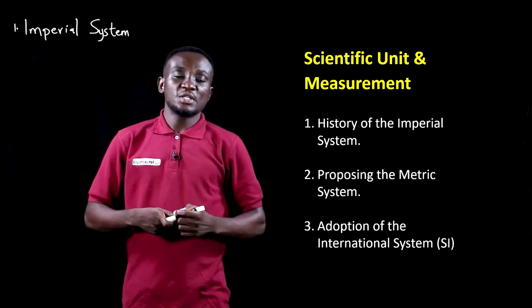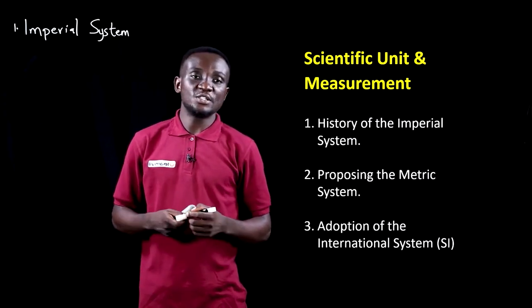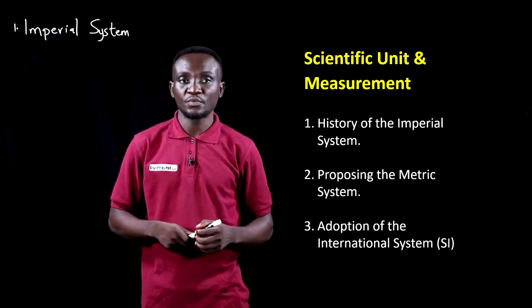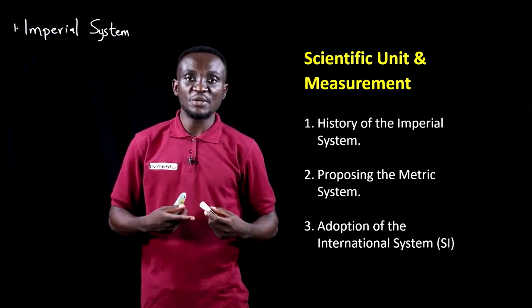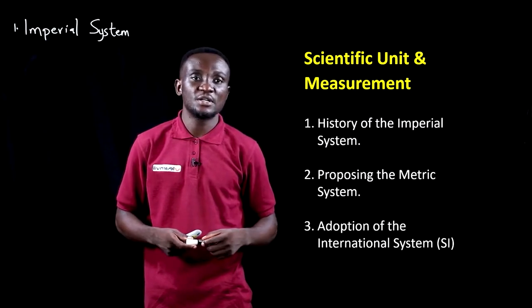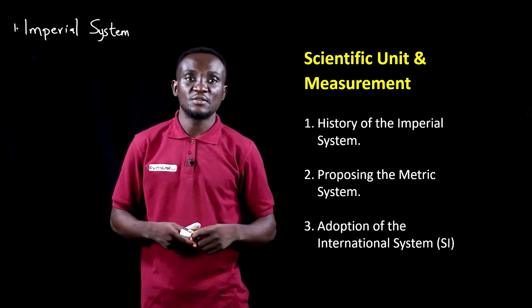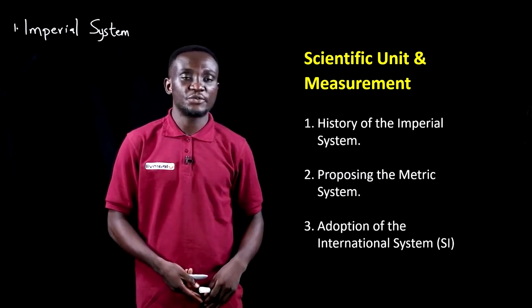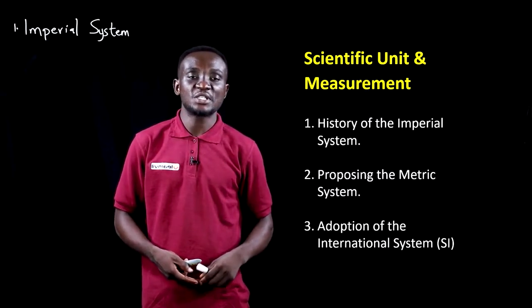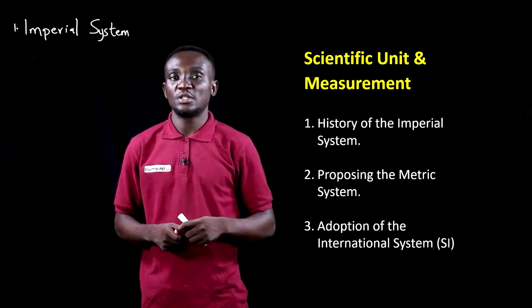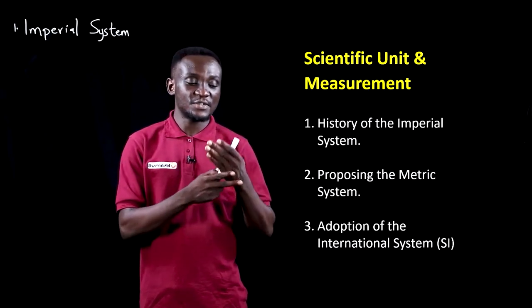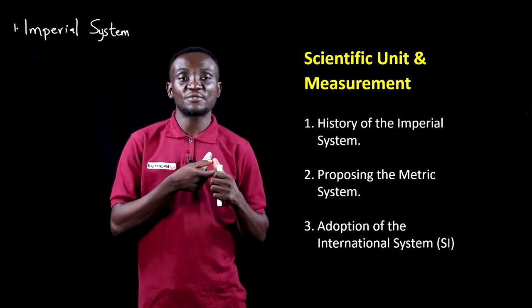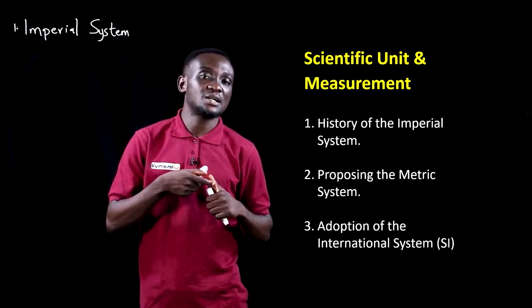This system was largely introduced in Great Britain in 1824, where they used some body parts of the king to represent different measurements of length. His foot, for example, was used to measure one foot. Then the length of his arm was used to measure one yard. And the first segment of his thumb represented an inch.